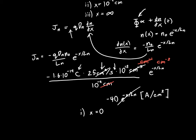And that means that the current, Jn, is minus 40 amps per centimeter squared, or the current density, rather.